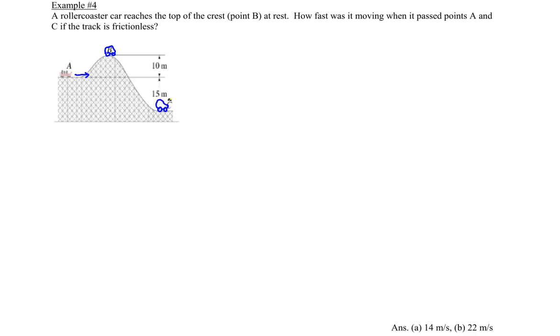So what we're asked to find is what is the velocity at A, what is the velocity at C, and we already know that the velocity at B is zero meters per second.